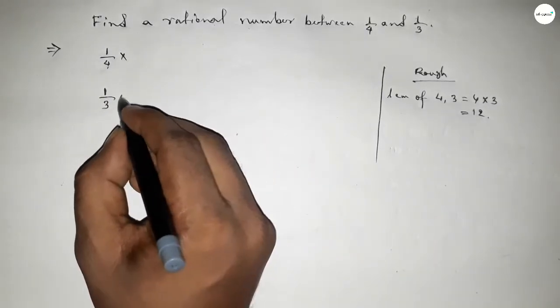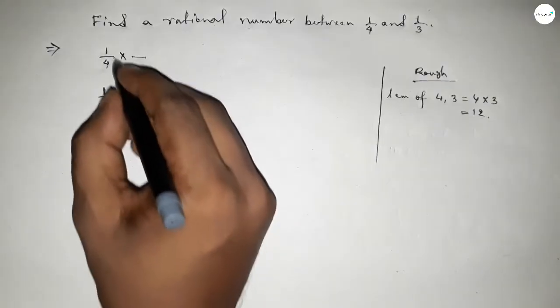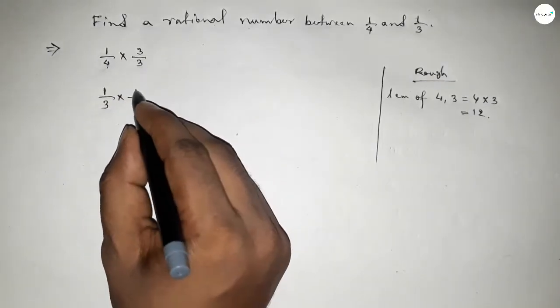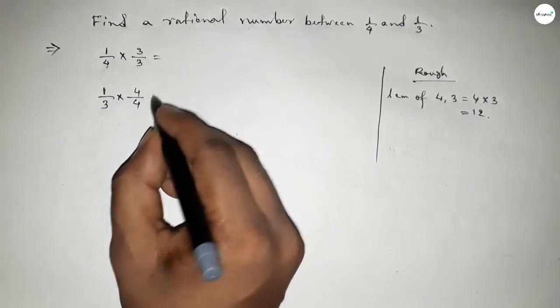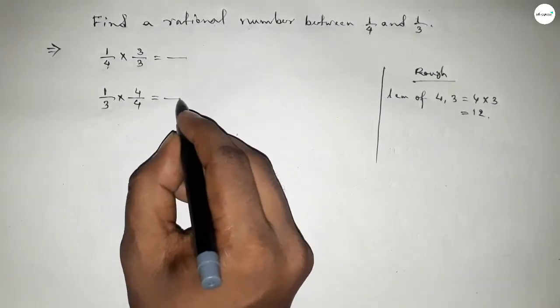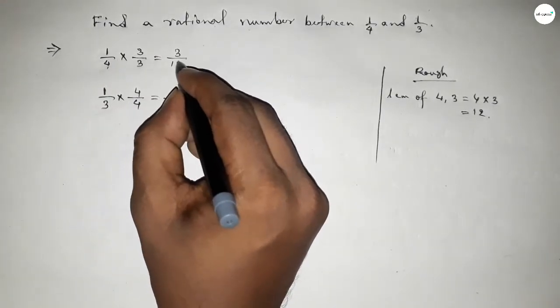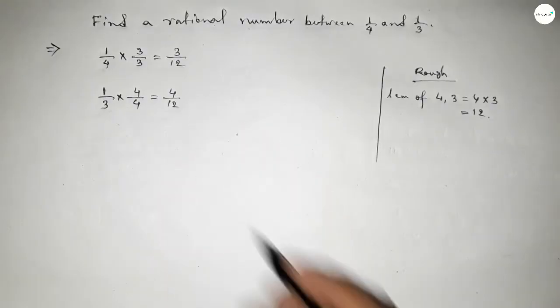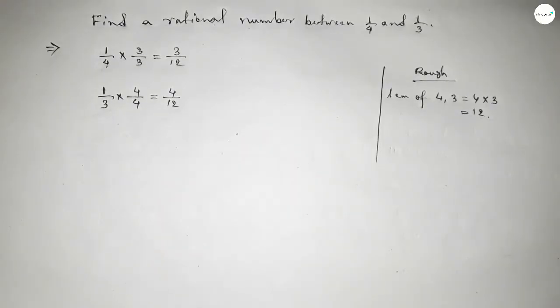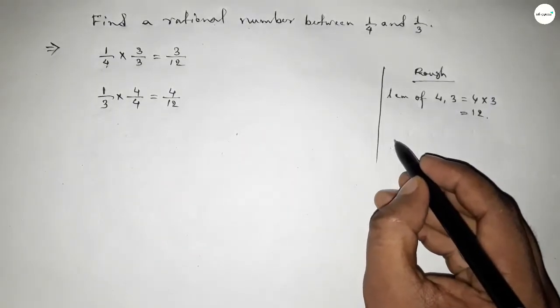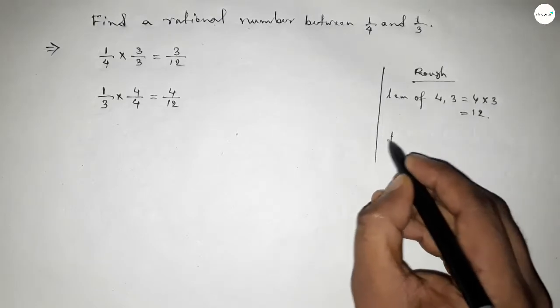Now what should be multiplying with both numbers to get denominator 12? So if you multiply by 3 and 4, then this is 3 over 12 and this is 4 over 12. Now for one rational number between any two numbers, we have to follow this method.